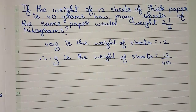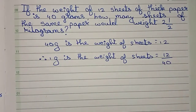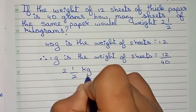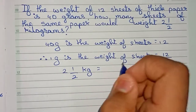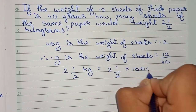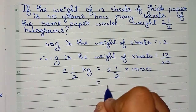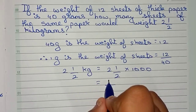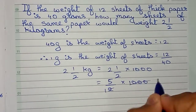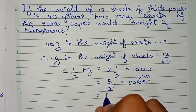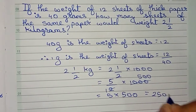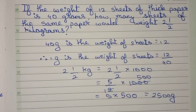...since we are writing the statements in grams, we cannot write kg here. We will convert 2 and 1/2 kg into grams. So 2 and 1/2 kg equals — to convert into grams we have to multiply by 1000 — so 2 and 1/2 into 1000. Now 2 and 1/2 means 5/2, so 5 into 1000, divided by 2, gives 500, and 5 into 500 equals 2500 grams.